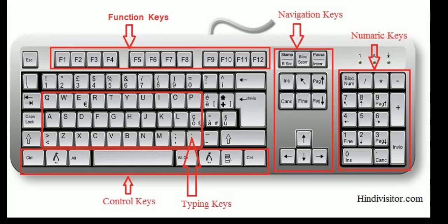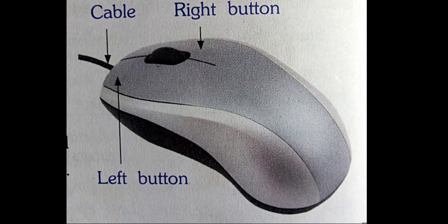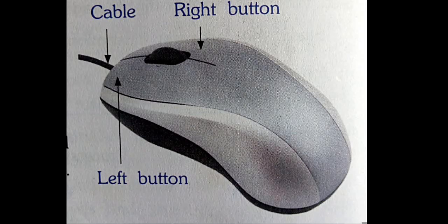The next input device is the mouse. The mouse is a pointing device with a roller on its base. It is a plastic device with two or three buttons on it. The left mouse button is the most frequently used button. The mouse is kept and moved over a mouse pad. The mouse controls the movement of a pointer on screen, which is called the mouse pointer.